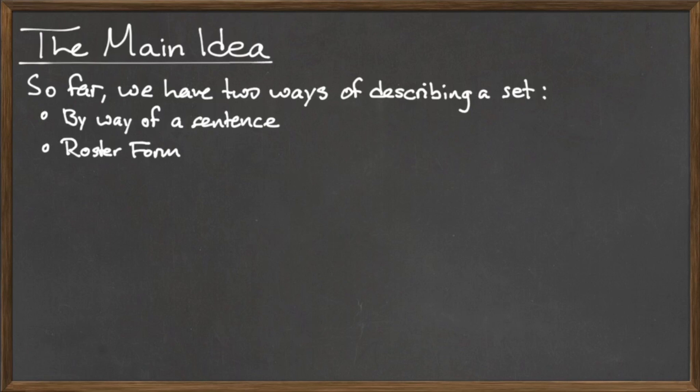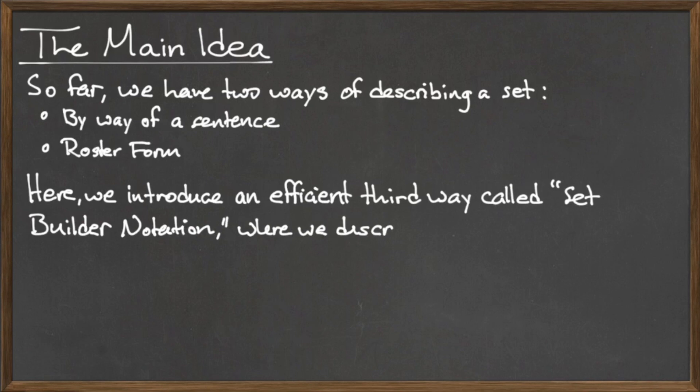The third method for describing a set is called set builder notation, where we use a single variable as a stand-in for all elements that meet certain properties.